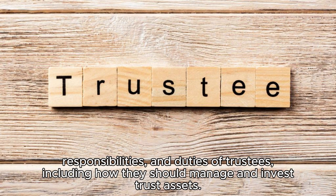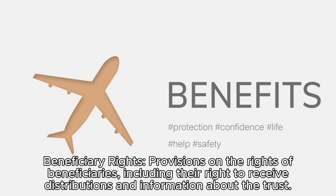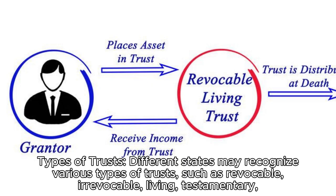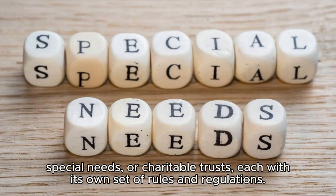Trustee powers and duties: detailed guidelines on the powers, responsibilities, and duties of trustees, including how they should manage and invest trust assets. Beneficiary rights: provisions on the rights of beneficiaries, including their right to receive distributions and information about the trust. Types of trusts: different states may recognize various types of trusts, such as revocable, irrevocable, living, testamentary, special needs, or charitable trusts, each with its own set of rules and regulations.